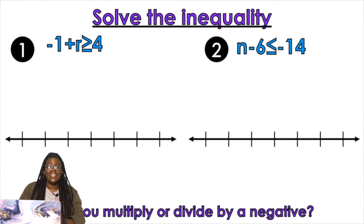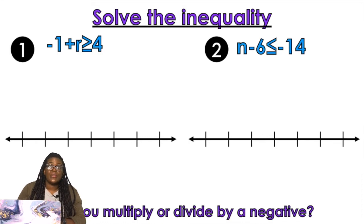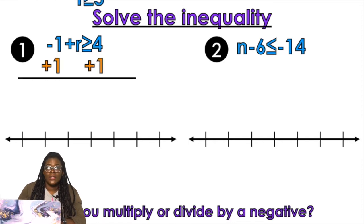Solve the inequality. Now that you know how to graph, we can actually move on to solving inequalities. We have one plus R is greater than or equal to four. We're going to get rid of that negative one by adding one. So R is greater than five.